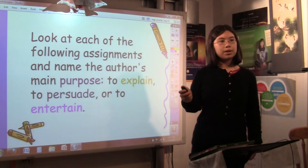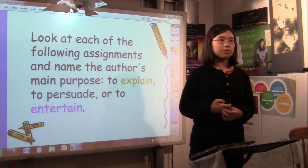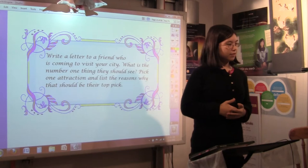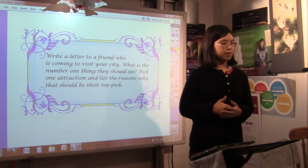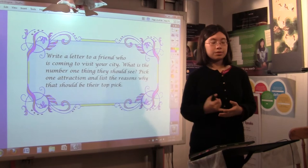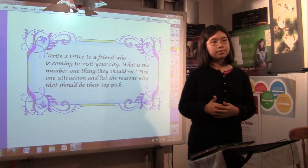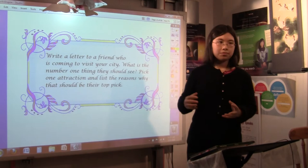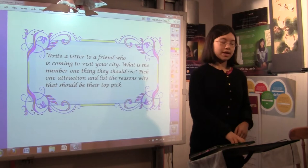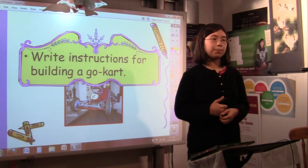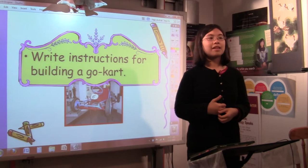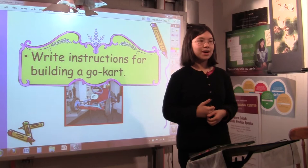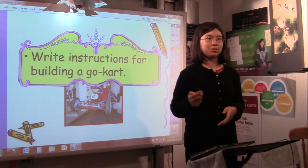Here's a quick activity for purpose. Look at each of the following assignments. Is the main author's main purpose to explain, to persuade, or to entertain? Write a letter to a friend who is coming to visit your city. What is the number one thing they should see? Pick one attraction and list the reasons why that should be their top pick. If you're writing a letter to a friend, you want to say, here's the number one thing you should see, and this is why. What type of writing is it? Persuasive. Persuasive. Yeah, exactly.